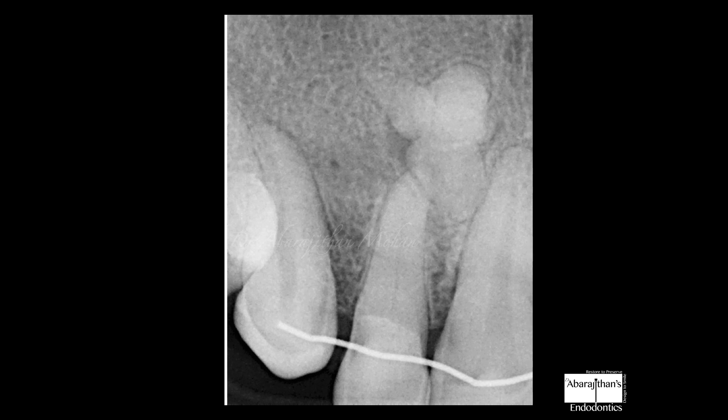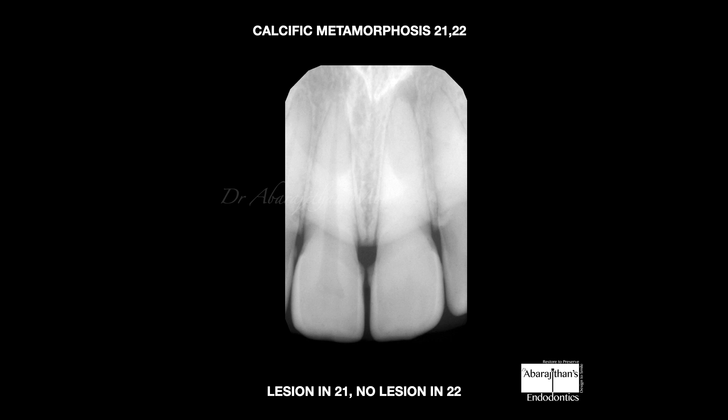Before we discuss more about this case, let me brief you about calcific metamorphosis. Calcific metamorphosis is a condition where the entire root canal anatomy completely gets sclerosed following trauma or severe orthodontic forces. Most of the time, following calcific metamorphosis, the tooth remains healthy — the root canal anatomy gets completely sclerosed, but in spite of this, the apical one-third retains healthy pulp tissue.